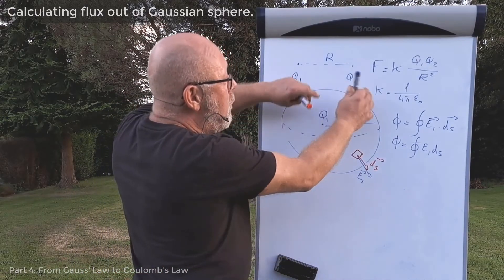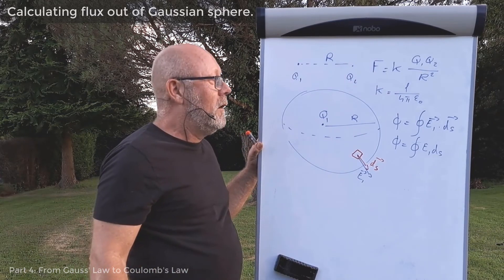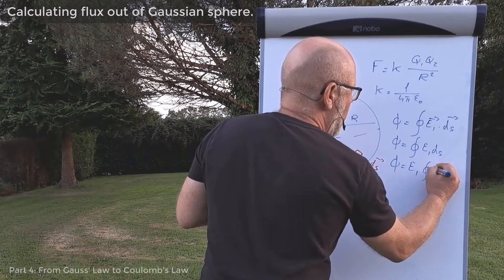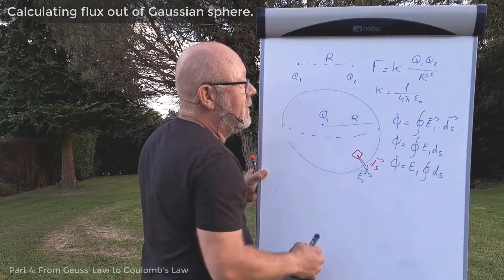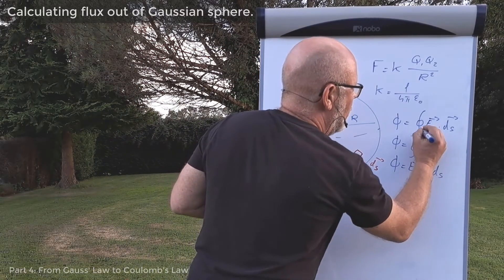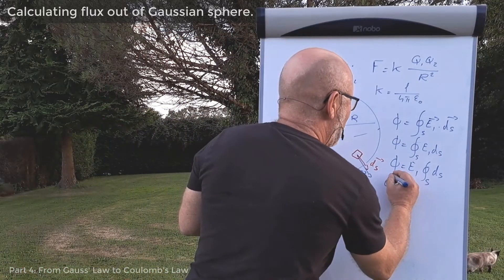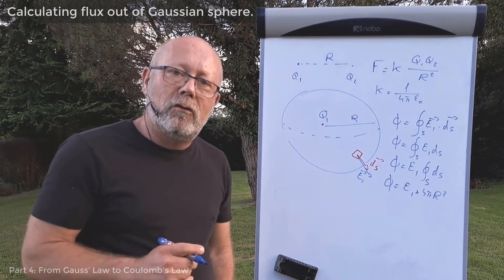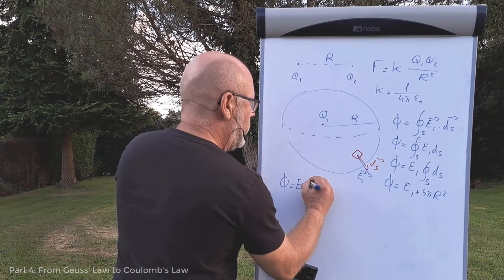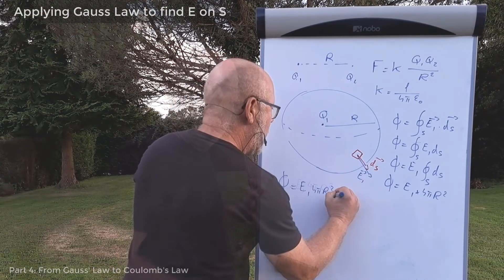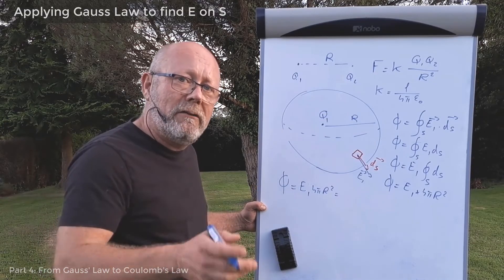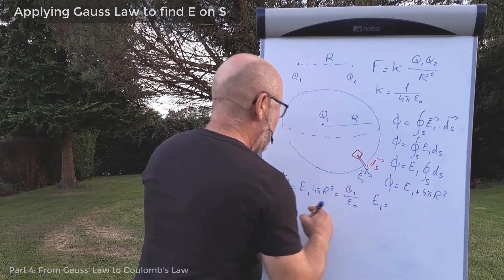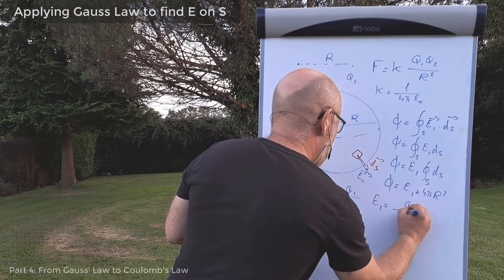So I can write this as E1 ds, and the cosine of the angle between the two is 1, so I went directly from vectors to magnitudes. Now E1 on the surface of the sphere, all points on the surface of the sphere have the same distance from the charge Q1. So the magnitude of E1 would be the same everywhere on the sphere, so I can remove it from the integral. Now this integral is done over the whole surface of the sphere, so I should put S here. Well, the surface of the sphere is 4πr². So I can write that the flux going through that surface is equal to E1 by 4πr². And that's where the magic of Gauss's law is going to come in.